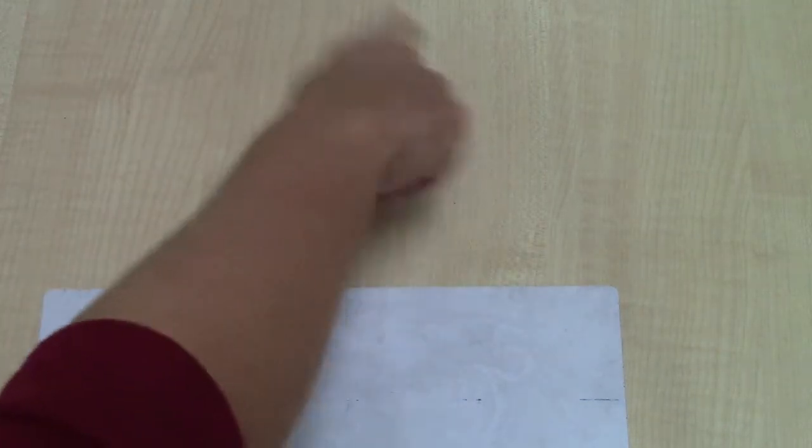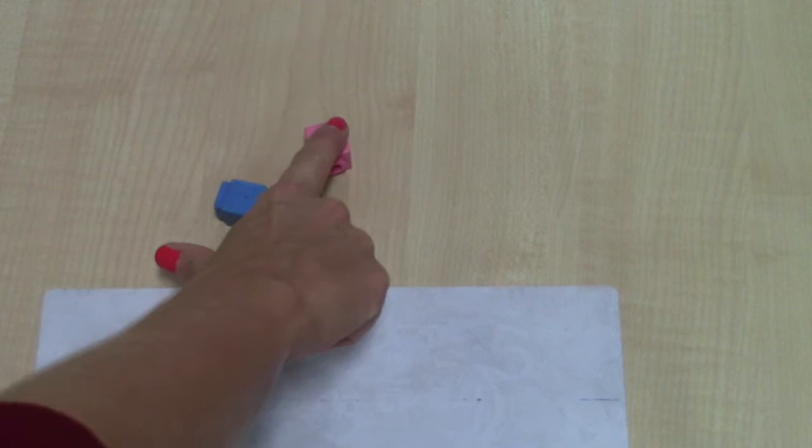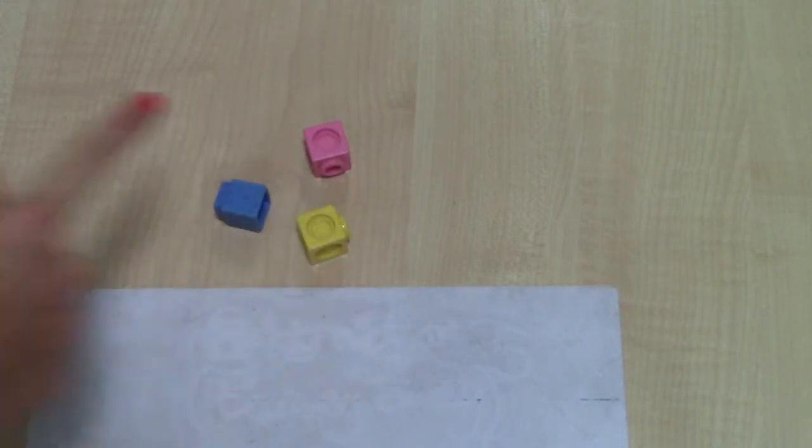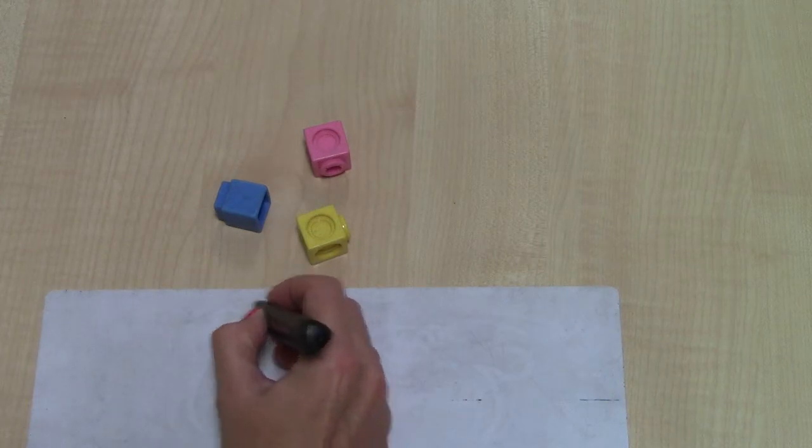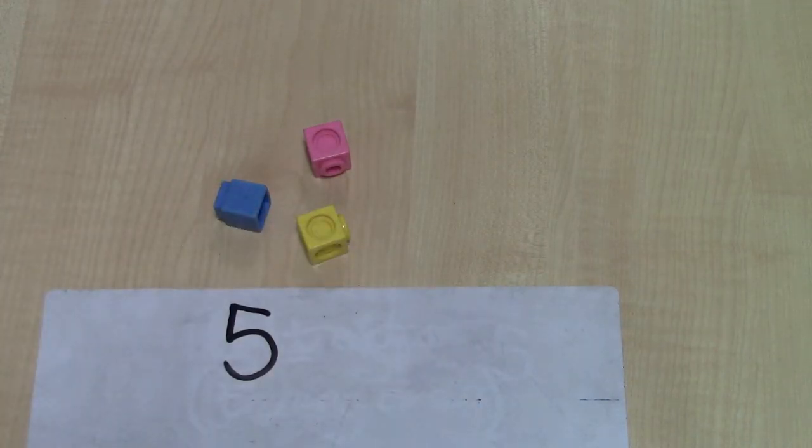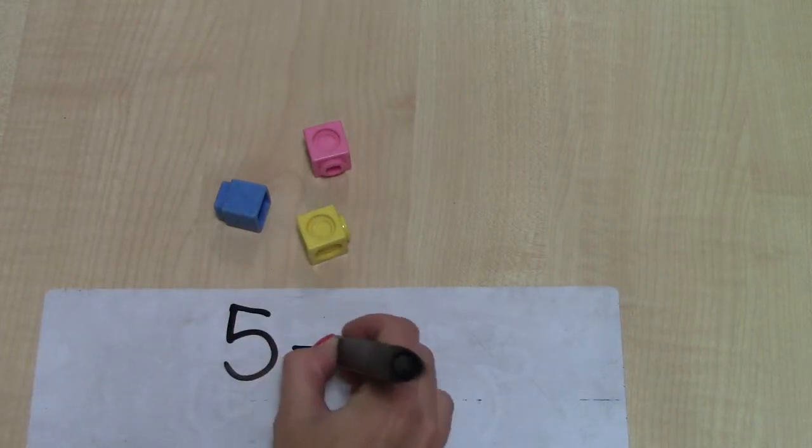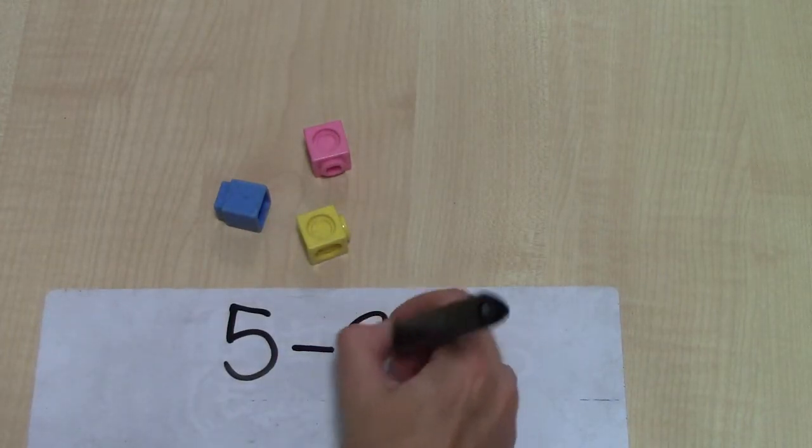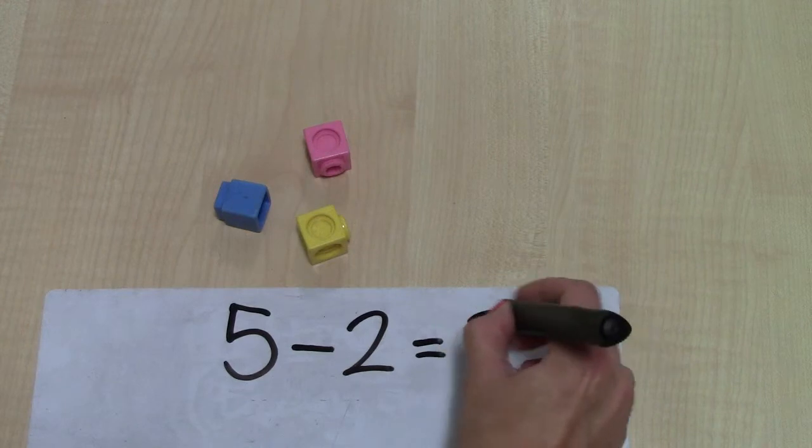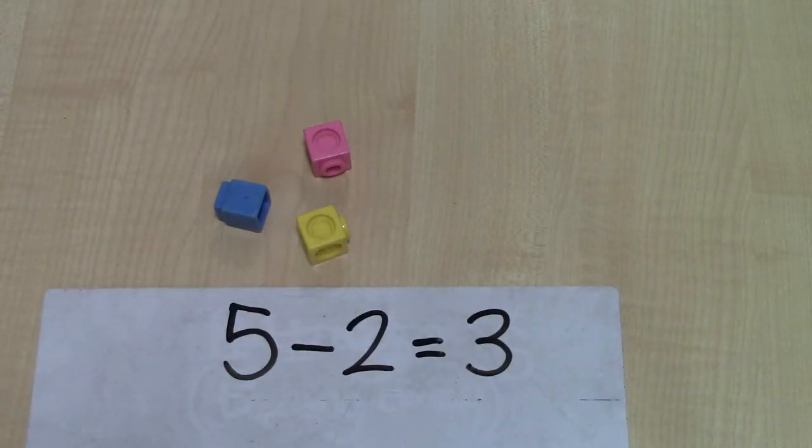Now I've got left this amount. I've got left one, two, three. And you might start to introduce the number sentence that goes alongside this calculation. So five take away two equals three. I've got three left.